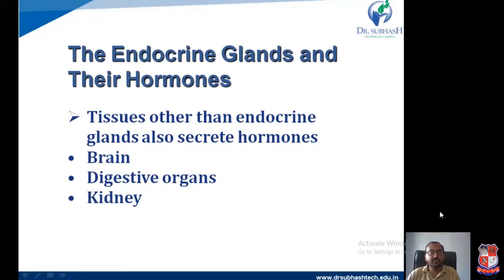Before proceeding to individual hormones, one thing we should all know about is the endocrine glands — those tissues or systems also secreting hormones — that is the brain, digestive organs, and the gonads.